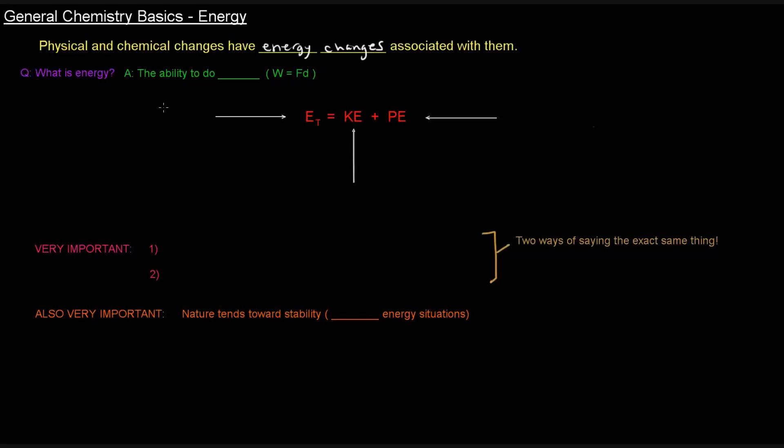So we need to know, what is energy? Energy is simply the ability to do work. And work equals force times distance, which you may have learned if you've taken physics already. So for right now, energy is the ability to do work.